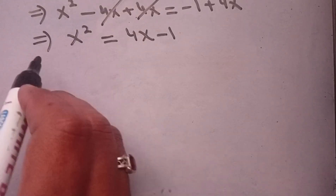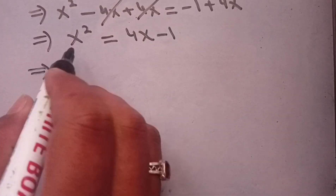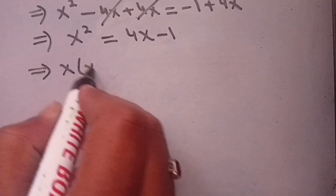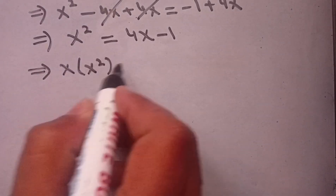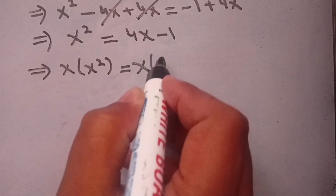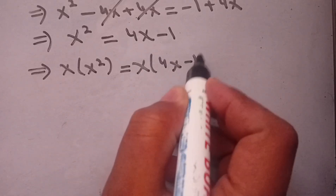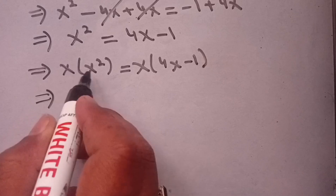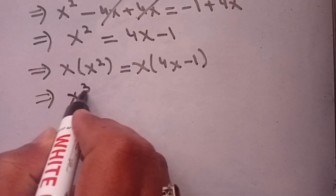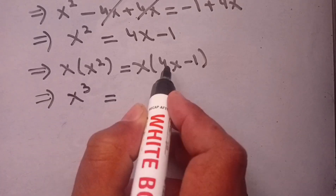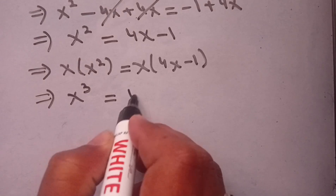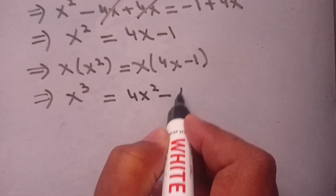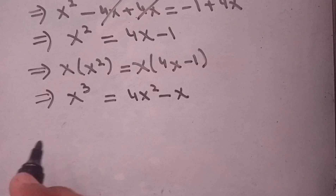Now we have the value of x squared. In the next step, we multiply x on both sides. We get x times x squared equals x times (4x minus 1), which implies x cubed equals 4x squared minus x.